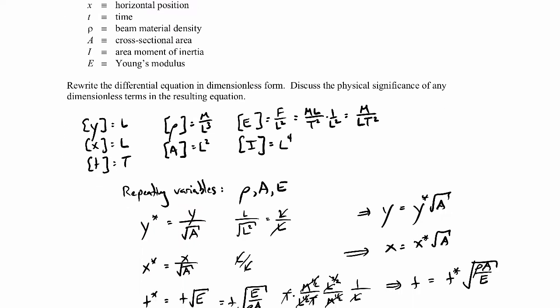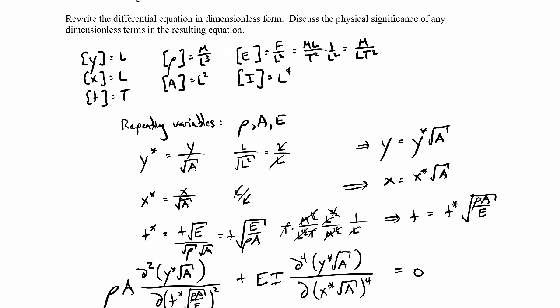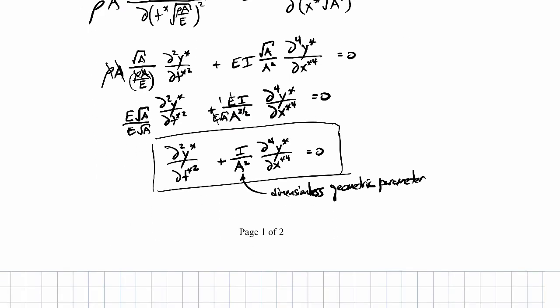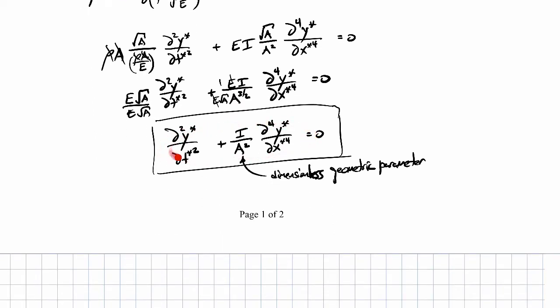Let me highlight the dimensionless quantities so they stand out: there's dimensionless y, dimensionless x, and dimensionless time. As long as you make your y, x, and t dimensionless in this manner, this is what the new differential equation will look like. Of course, when you solve this you'd have to apply boundary conditions that are also in dimensionless form.